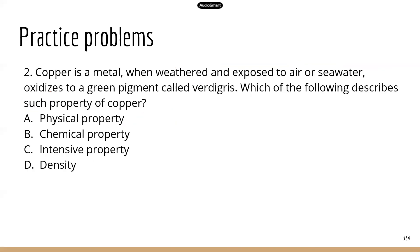Next question: copper is a metal that when weathered and exposed to air or seawater oxidizes to a green pigment. Which of the following describes such a property? The keyword 'oxidizes' gives you a clue — this is probably some kind of chemical reaction. Also, copper changes to a green pigment, which is the formation of a new substance. So what kind of property leads to a new substance? Chemical reaction — chemical property. The correct answer is B.